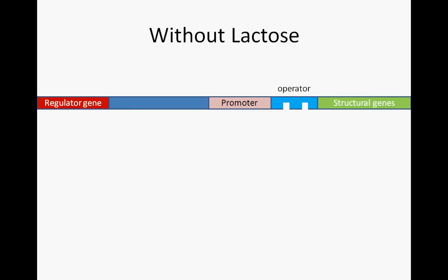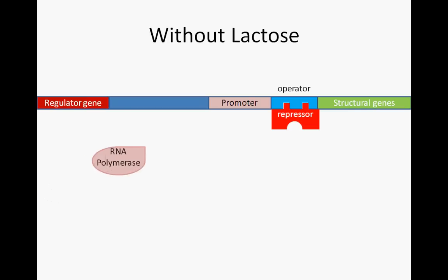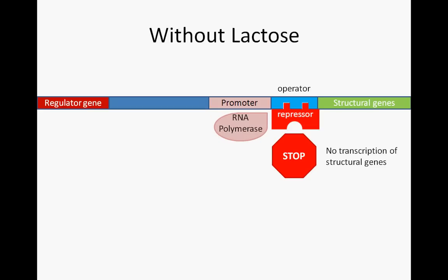Within the lac operon, a regulatory gene codes for a repressor molecule. In the absence of lactose, this repressor molecule binds to the DNA just upstream of the genes coding for beta-galactosidase, permease, and transacetylase. These genes are known as the structural genes. The site of repressor binding is known as the operator. As long as the repressor is bound to the operator, RNA polymerase cannot proceed through the structural genes, and therefore transcription of beta-galactosidase, permease, and transacetylase is stopped.